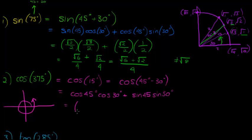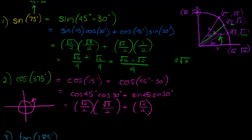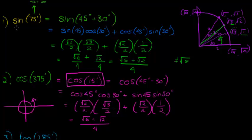Substituting values: cos of 45 is square root 2 over 2, cos of 30 is square root 3 over 2, sin of 45 is square root 2 over 2, and sin of 30 is a half. We get exactly the same answer: square root 6 plus square root 2 over 4. This is because cos of 15 and sin of 75 are complementary angles — sin of something and cos of its complementary angle are the same.